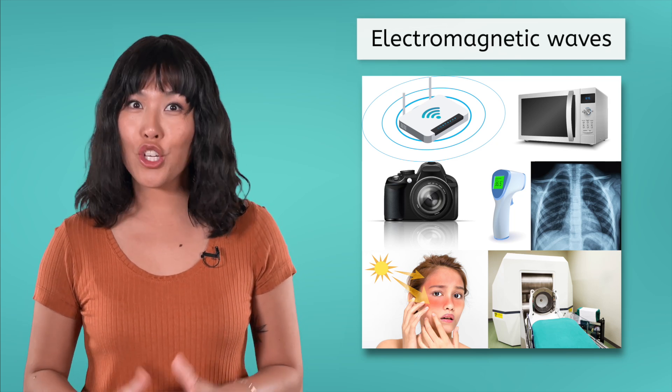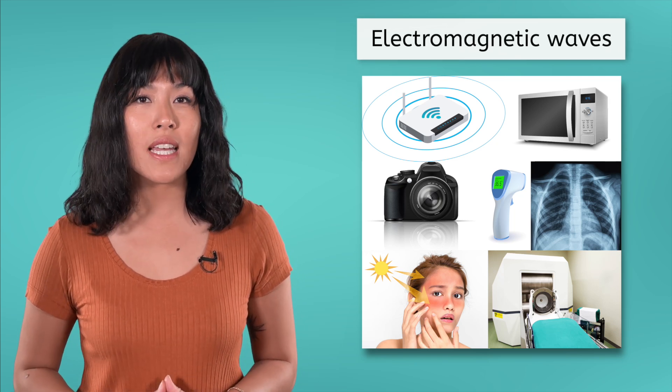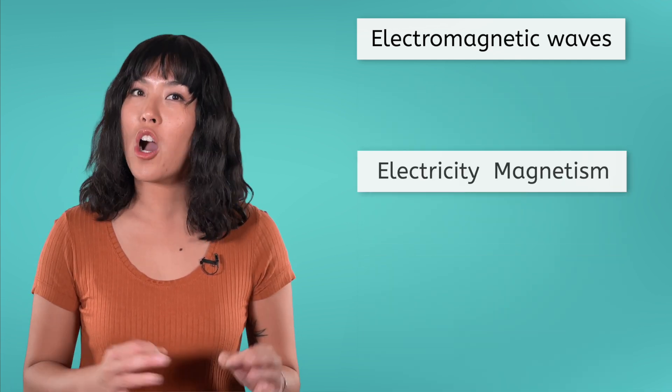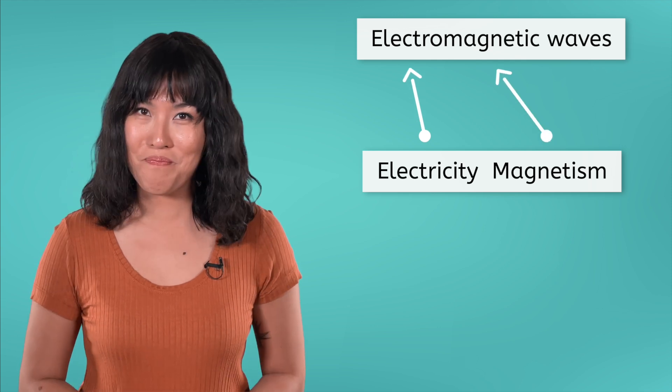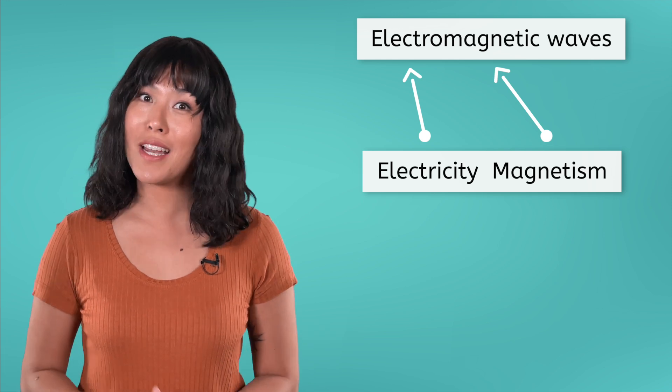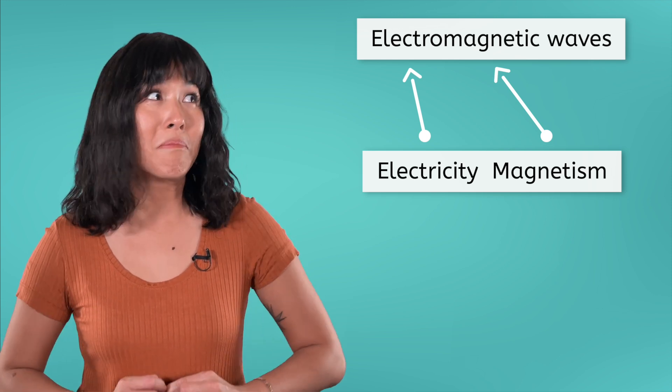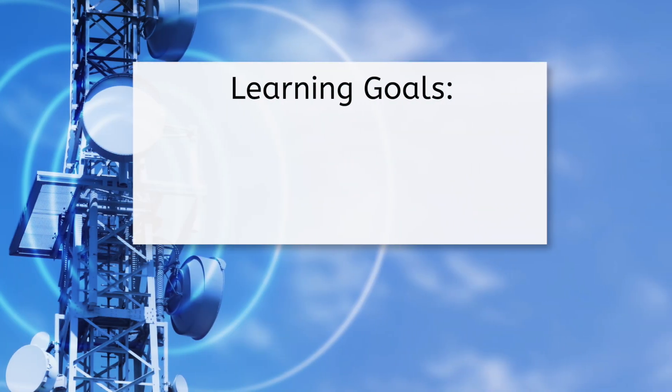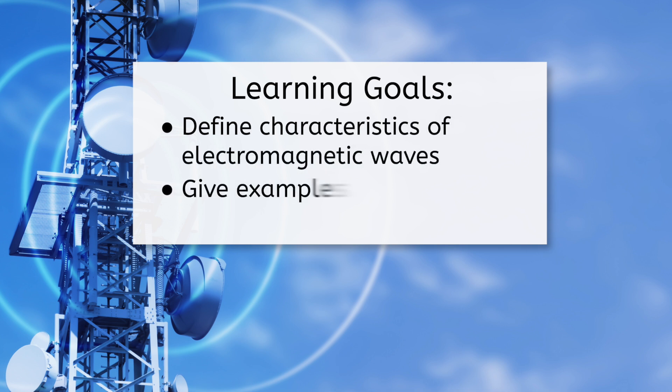Electromagnetic waves. Do you recognize the two root words in electromagnetic waves? They are formed from a combination of electricity and magnetism. We'll find out today that they share characteristics with other types of waves we have studied and that they are all around us every single day. Before we explore these waves further, let's look at our goals for this lesson. By the end, you'll be able to define characteristics of electromagnetic waves and give examples of each type of electromagnetic wave.